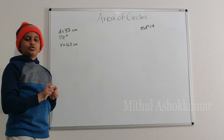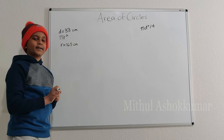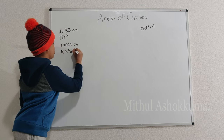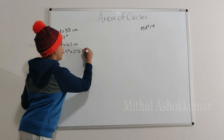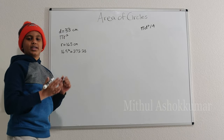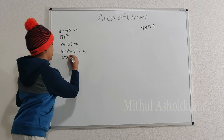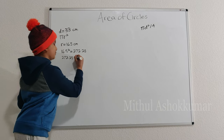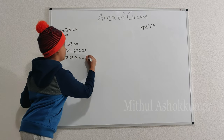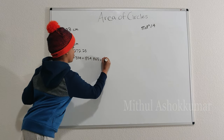Now, we can use the formula pi r squared to find out the area of the steering wheel cover. 16.5 squared equals 272.25. If you want to use a calculator, go ahead. Now, we will multiply 272.25 times 3.14, which will get us 854.865 centimeters squared.